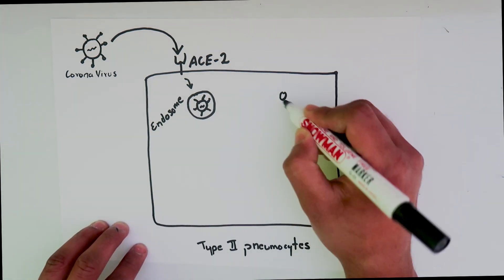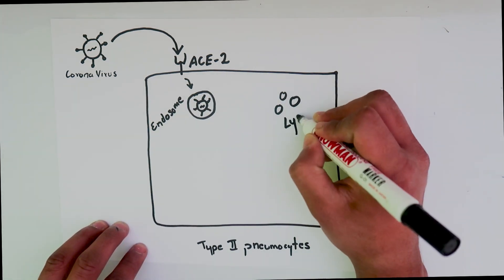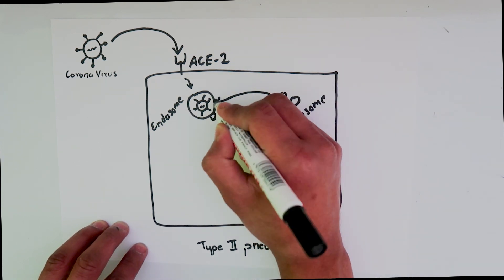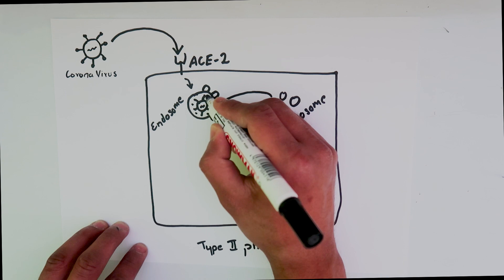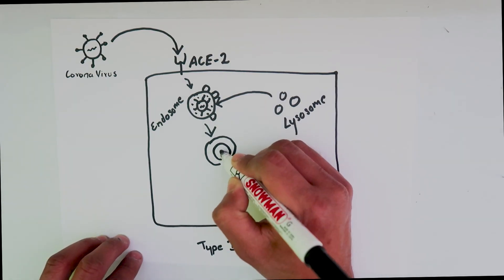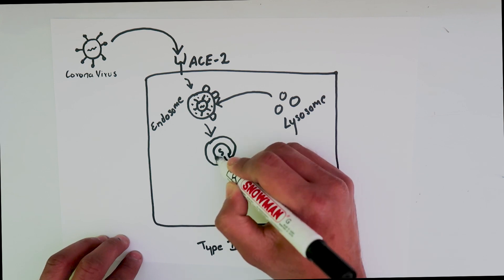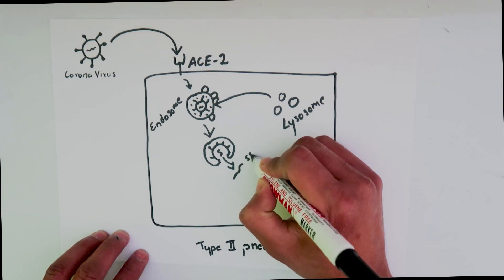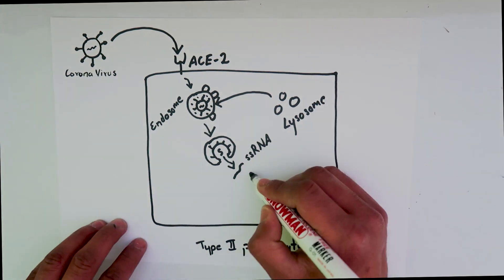Some lysosomal cells fuse with this endosome, forming an endolysosome. The lysosome brings lysosomal proteases along with it. These lysosomal proteases activate the surface spikes of the coronavirus, and when these spikes get activated, they release the single-stranded RNA into the cell.